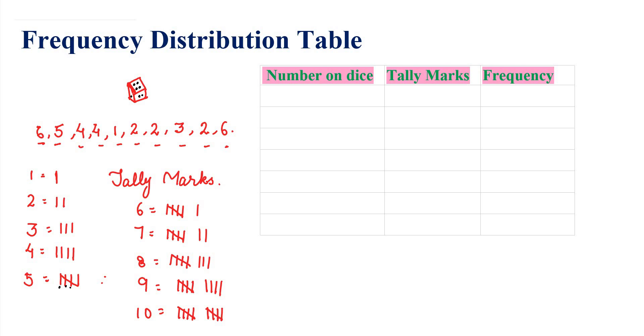So you saw how we show tally marks — how to represent one, two, three, four, five, six, seven, eight, nine, ten. This is the frequency distribution table, and we represent the values in tally marks.